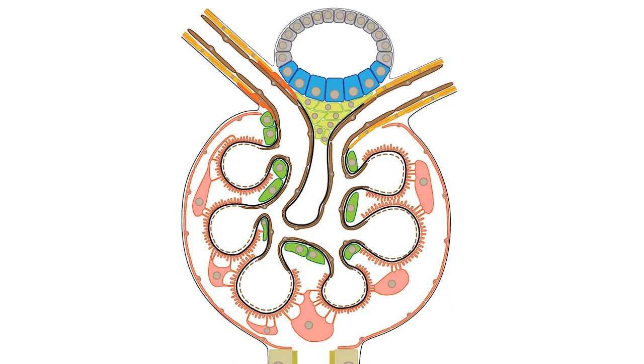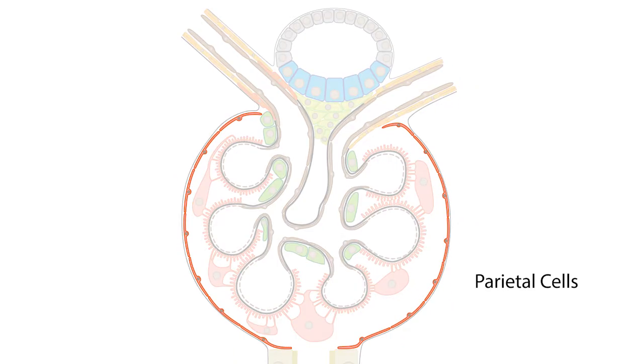The cells that form the capsule that make up the Bowman space are referred to as parietal cells, which are a specialized epithelial cell type. The Bowman space is a cup-like structure that surrounds the glomerular capillaries and is designed to collect the ultrafiltrate.